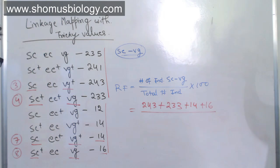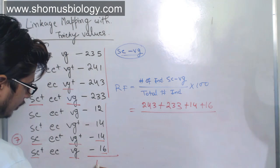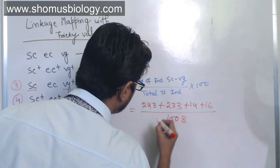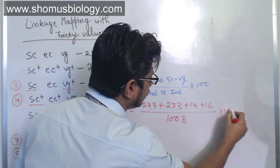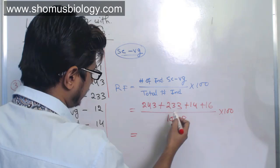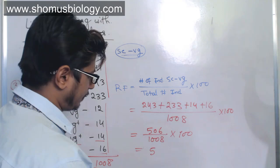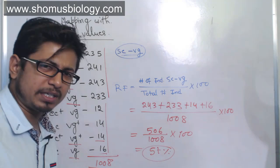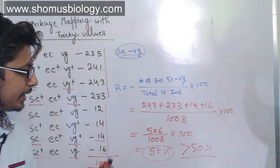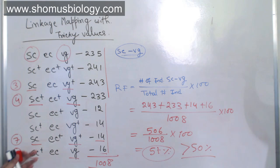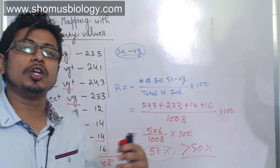The total number of recombinant types is divided by the total number of individuals. The total is 1008. So we calculate: 506 divided by 1008 multiplied by 100. The value we get is just over 50% — approximately 50.1% or fifty-one-point-something percent. Whatever it is, it is more than 50%.